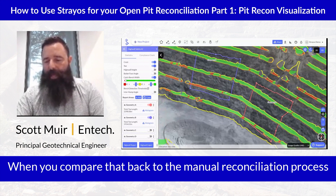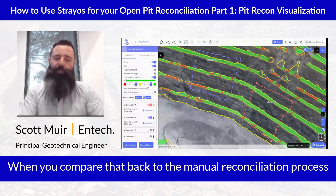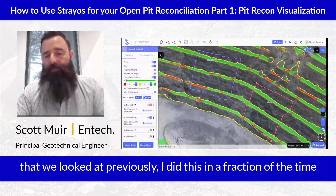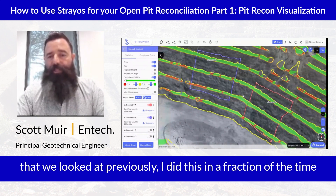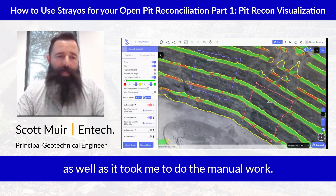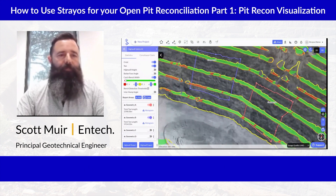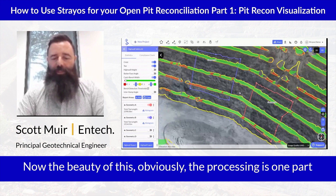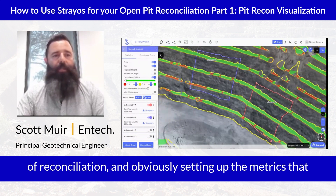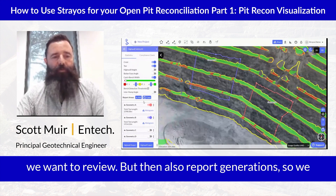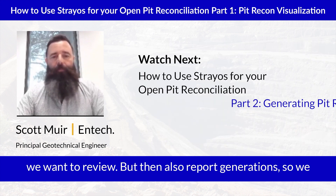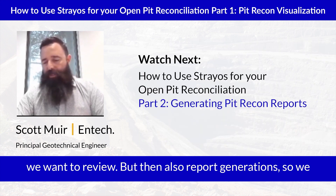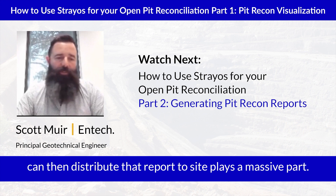When you compare that back to the manual reconciliation open pit process we looked at previously, I did this in a fraction of the time it took to do the manual work. The processing is one part of reconciliation, and setting up the metrics we want to review is another. But report generation — so we can then distribute that report to site — also plays a massive part.